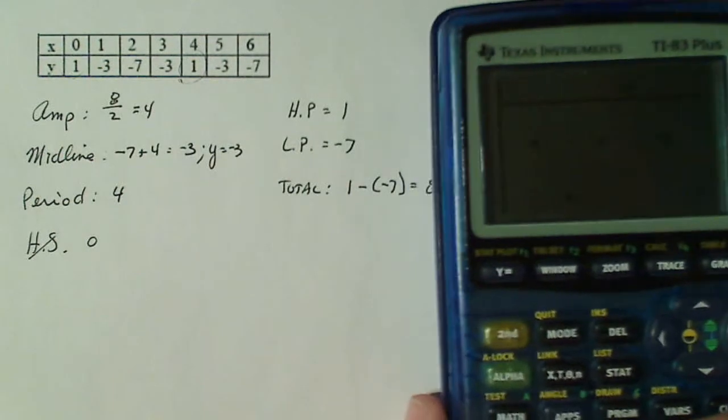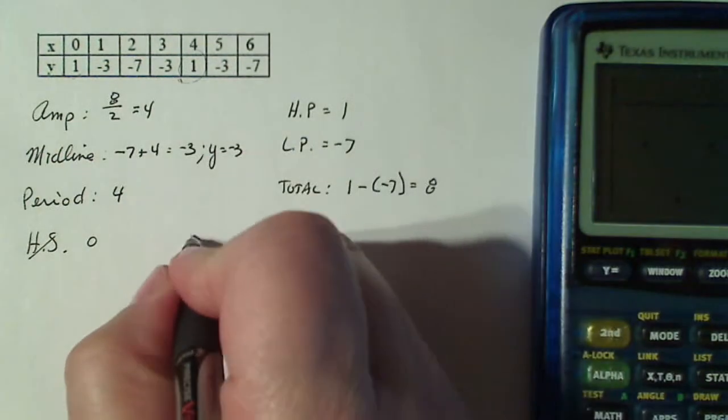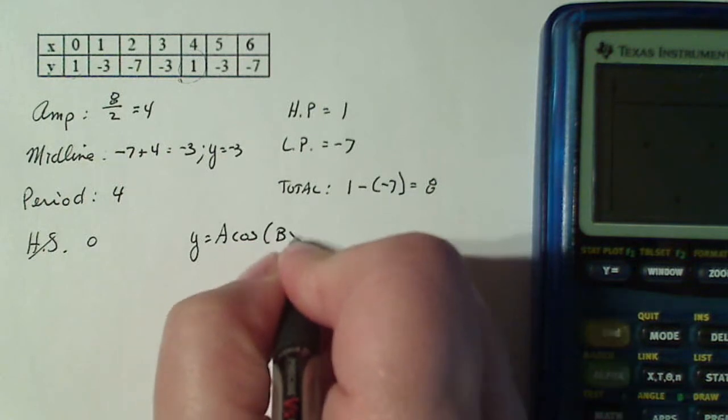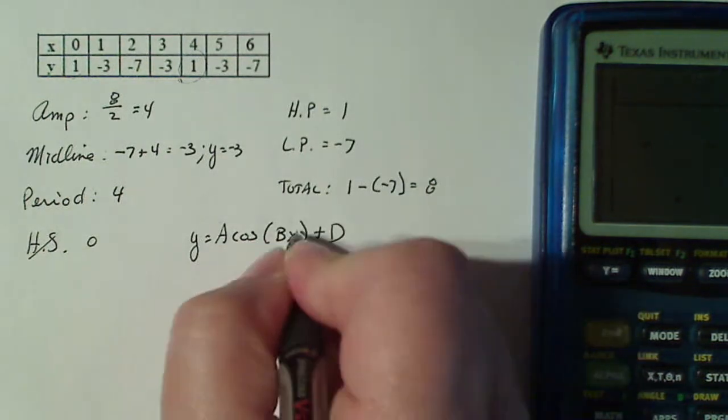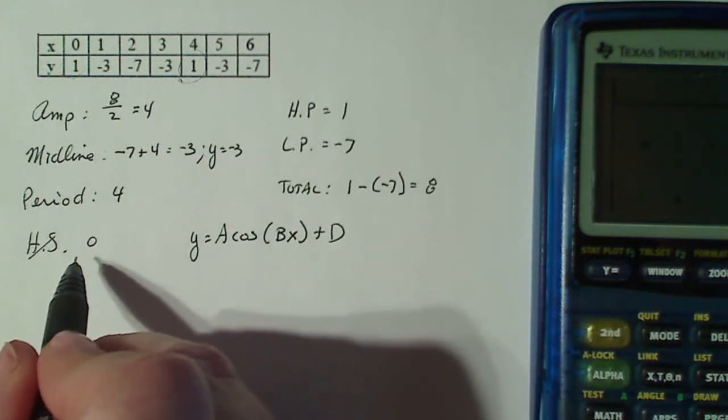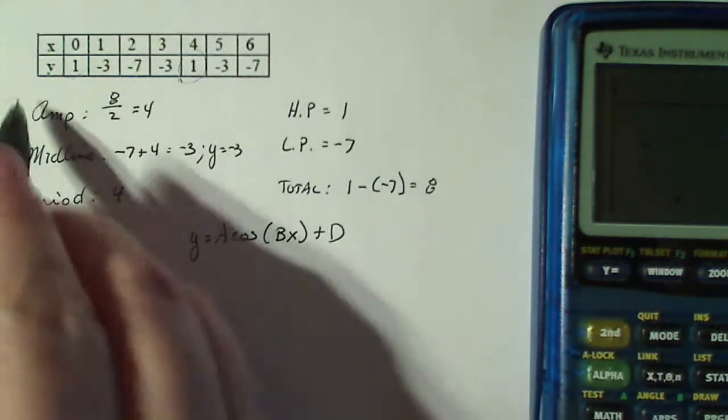So the basic structure of the model that I'm going to be building is going to be y equals a cosine bx plus d. Notice there's no c value lurking in there because my horizontal shift is zero.